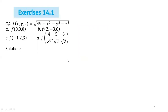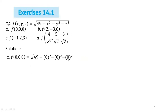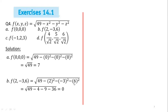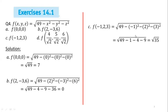Next, we move to question number 4. Again we calculate the value of the given function at particular triplets. For part a, we place x = 0, y = 0, z = 0, giving √(49 − 0 − 0 − 0) = √49 = 7. For part b, we place x = 2, y = −3, z = 6. For part c, we replace x = −1, y = 2, z = 3, and after simplification the answer is √35.